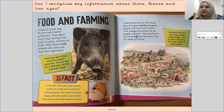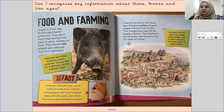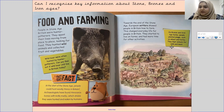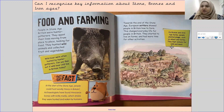Towards the end of the Stone Age, European settlers showed people in Britain how to farm. This changed everyday life for people in Britain. They started to live on farms and had more time for other activities. On Bronze and Iron Age farms, people planted crops such as wheat and barley. They kept animals for milk and meat. You can pause the screen to take down any information you missed.